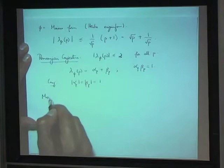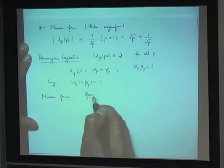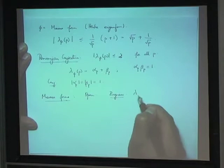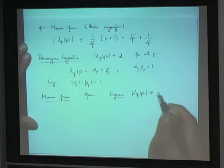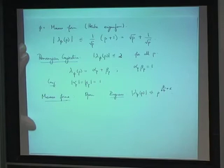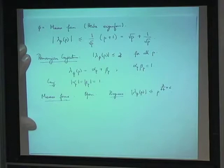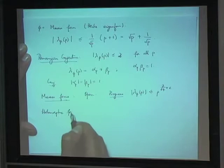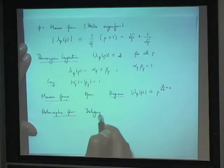This conjecture is open in the Maass form case, except we have progress towards it — we know things like the p-th Hecke eigenvalue is bounded by some power of p, something like p to the 7/64 plus epsilon. That's pretty small, but certainly not as small as p to the epsilon or as small as 2.